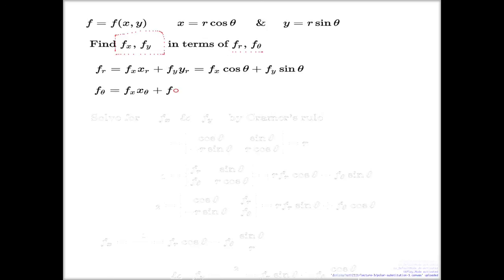It's a chain rule again, f by x by the first own argument, then x by theta, then f by y, second own argument, and then y by theta.